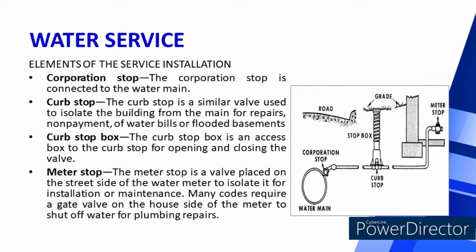Elements of Service Installation: First is the corporation stop, which is connected to the water main. Second is the curb stop, a valve used to isolate the building from the main for repairs, non-payment of water bills, or flooded basement. Third is the curb stop box, an access box to the curb stop for opening and closing the valve. Last is the meter stop, a valve placed on the street side of the water meter to isolate it for installation or maintenance. Many codes require a gate valve on the house side of the meter to shut off water for plumbing repairs.